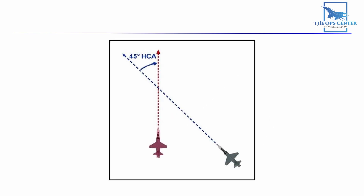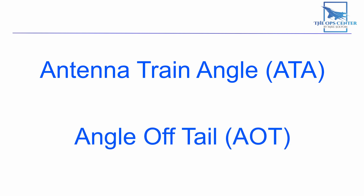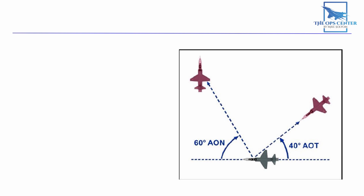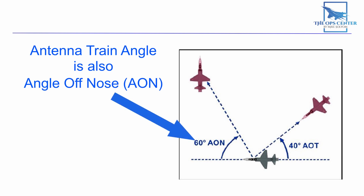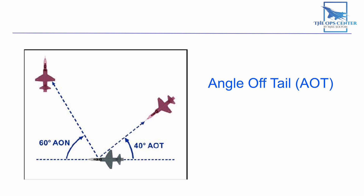The heading difference between two aircraft is known as the heading crossing angle, or HCA — sometimes referred to as angle off. There are two angles specific to your own aircraft: antenna train angle and angle off tail. Antenna train angle is commonly referred to as angle off nose, and it's the angle that a fighter's radar antenna would have to turn away from the aircraft's heading to face the bandit. Angle off tail is the same, only measured from the tail. With the bandit on the fighter's tail, the AOT and the AA shown to the bandit would be the same, so in a defensive situation the terms can be used interchangeably.